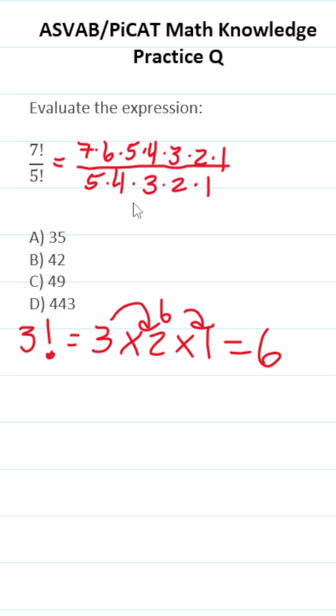Of course, we can cross out corresponding values in our numerator and denominator. So cross out these corresponding 5s, 4s, 3s, 2s, and 1s.